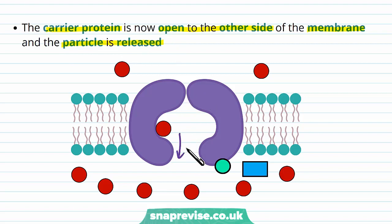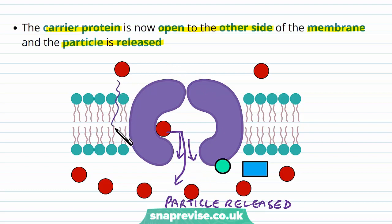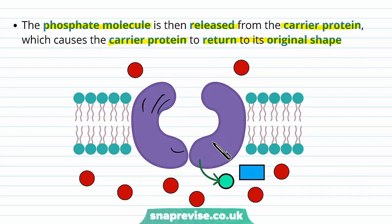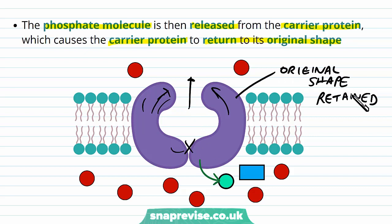The protein has changed shape to allow this part to open, and then the particle simply goes through and joins the others. We've achieved moving this particle from one side to the other without making it squeeze through the membrane, which is massively unfavourable. We've used a carrier protein to change shape and allow this to happen. Once the particle has gone through, the phosphate molecule from the ATP hydrolysis is released from the carrier protein. The carrier protein now has the correct chemical structure to return to its original shape — opening this side and closing off the other. It's most likely that another ATP molecule will then bind to the carrier protein once another particle comes along, and the cycle begins again.